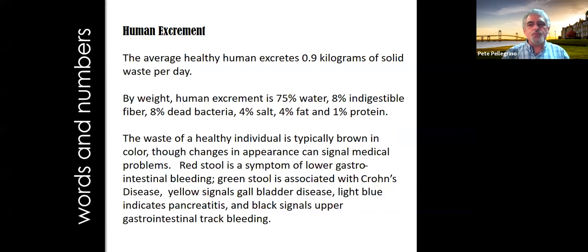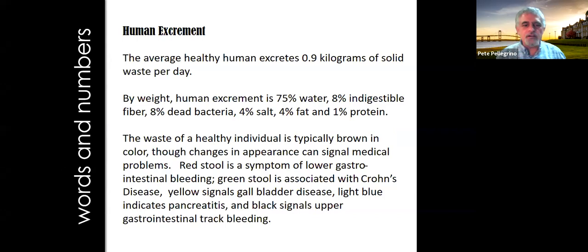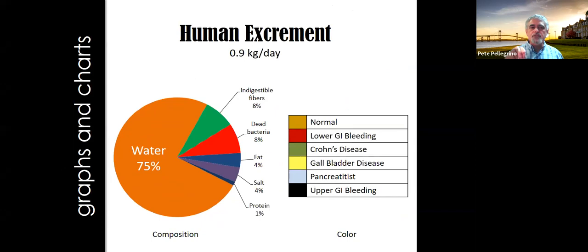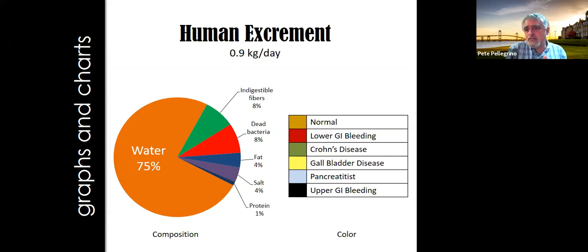When communicating, we can just use words. Here's a slide about human excrement — delightful. Communicating in words and numbers: it's 75% water; red stool usually means lower intestinal bleeding; et cetera. There's some information here, but could we communicate it better? We can start using graphs and charts. If we're talking about color and we don't show color, that's a no-brainer: if you're talking about color, show the color. In this case, trying to show that the color of your feces indicates your health. A pie chart — not my favorite, there are problems with pie charts — but it works to give the big takeaway that it's mostly water.